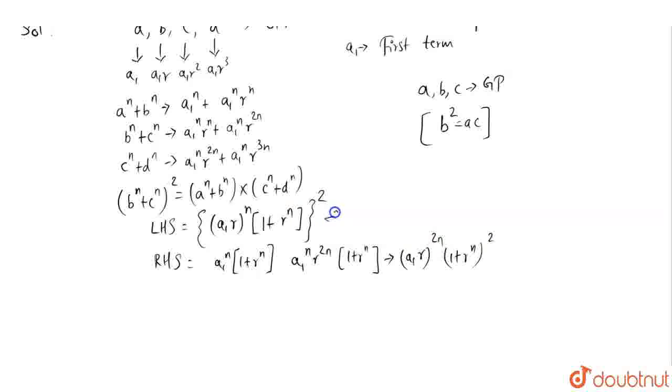This can be further simplified into A1 power 2N into R power 2N into 1 plus R power N whole square. We can see these two are equal, that means RHS is equal to LHS. Hence, proved. Thank you, guys.